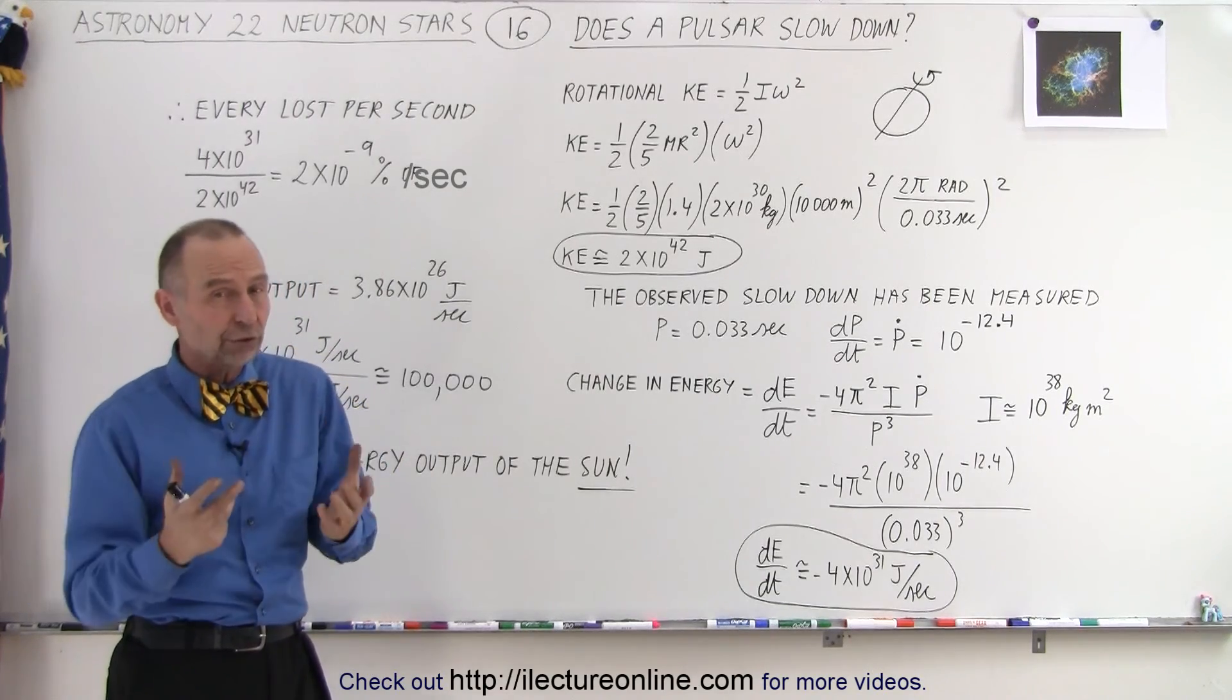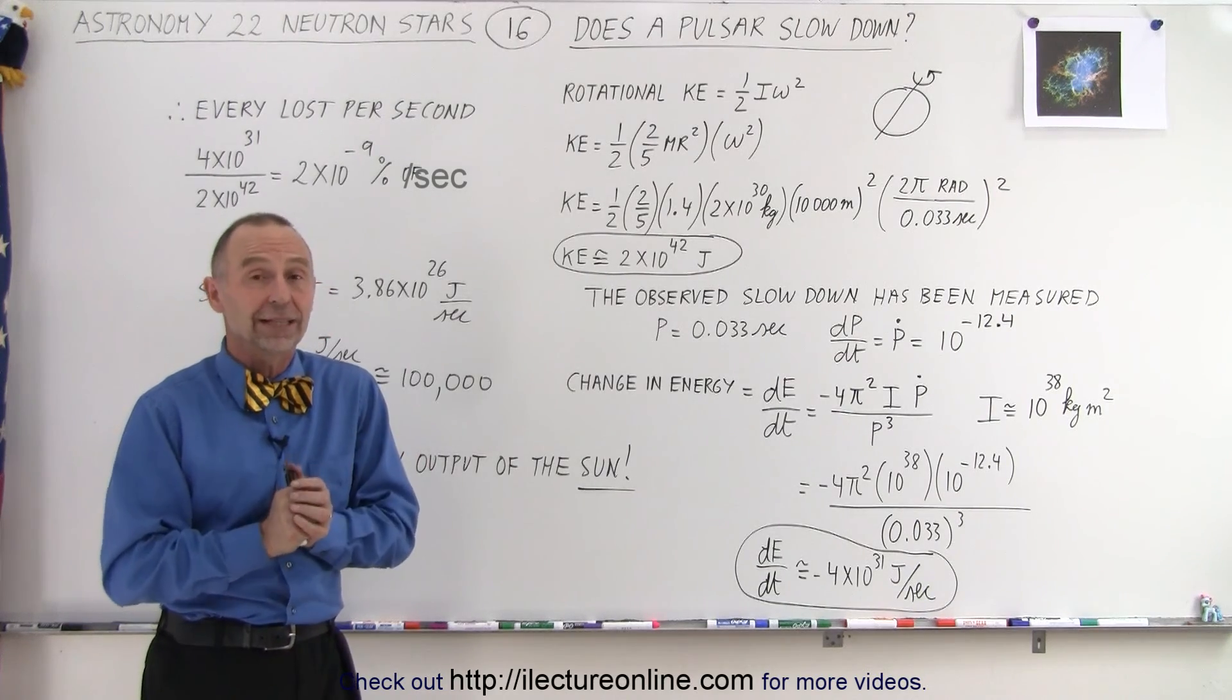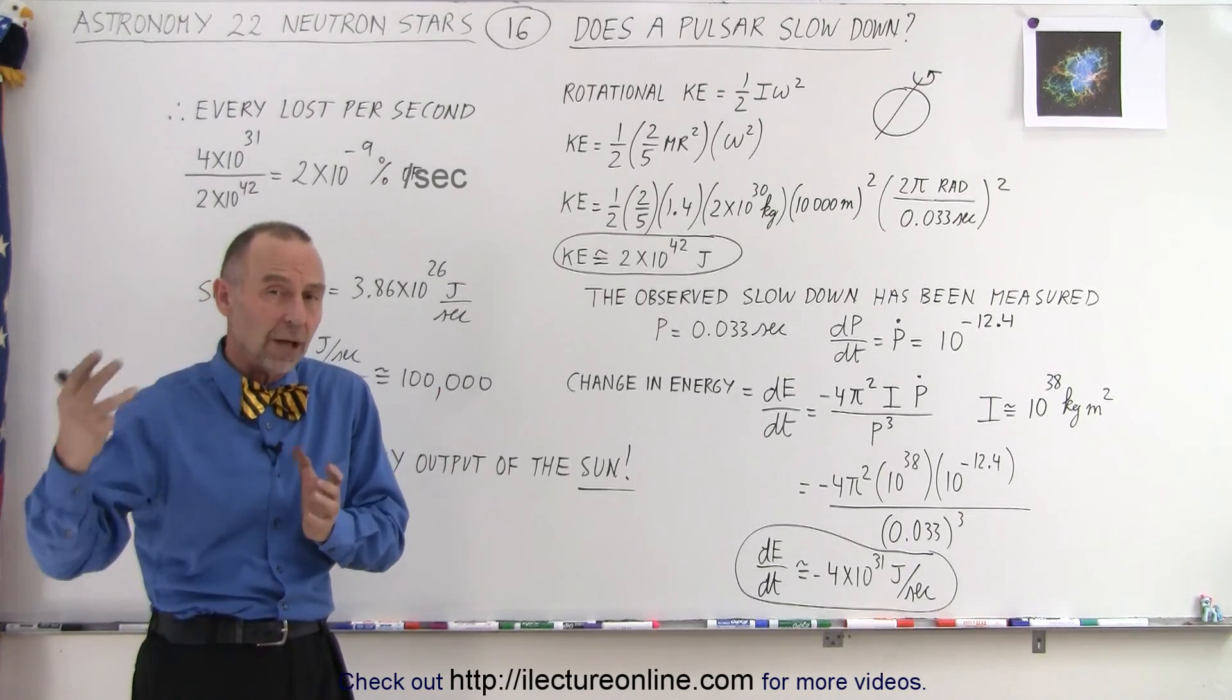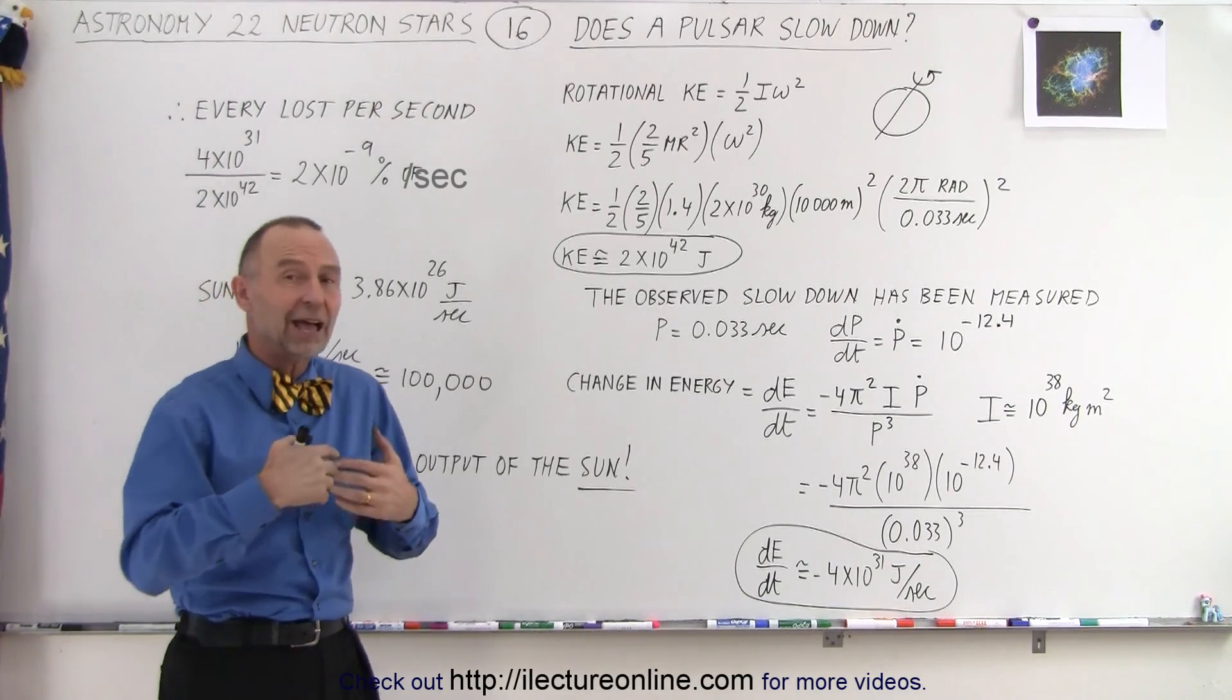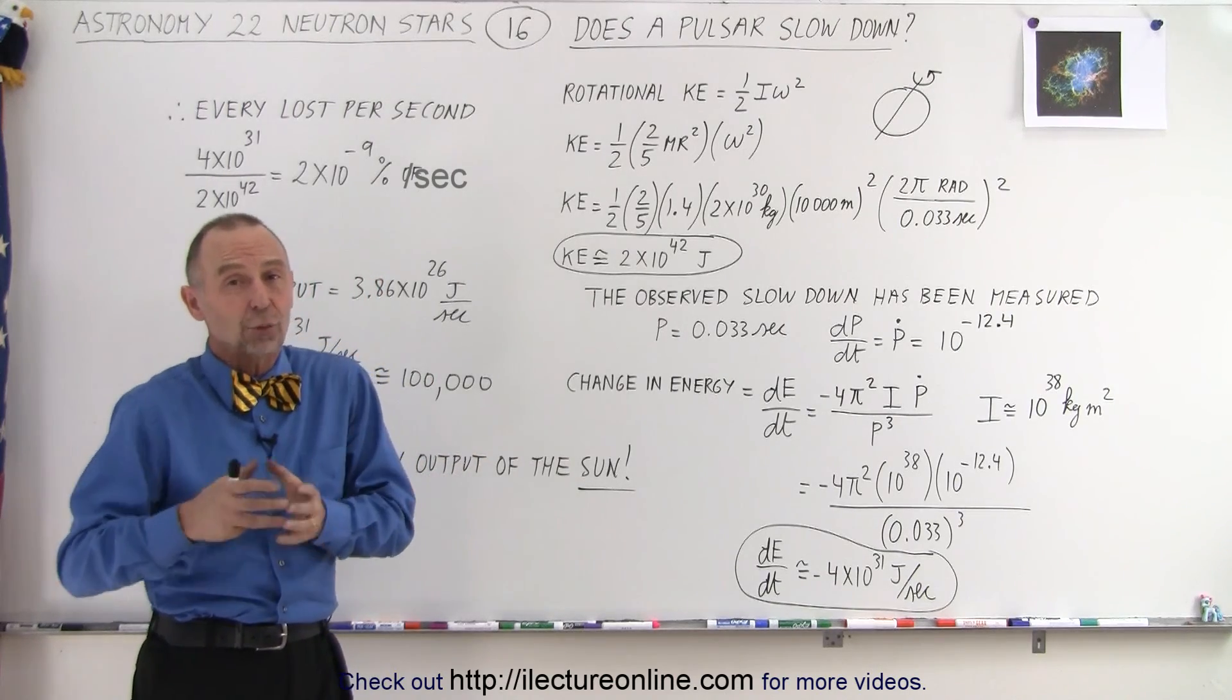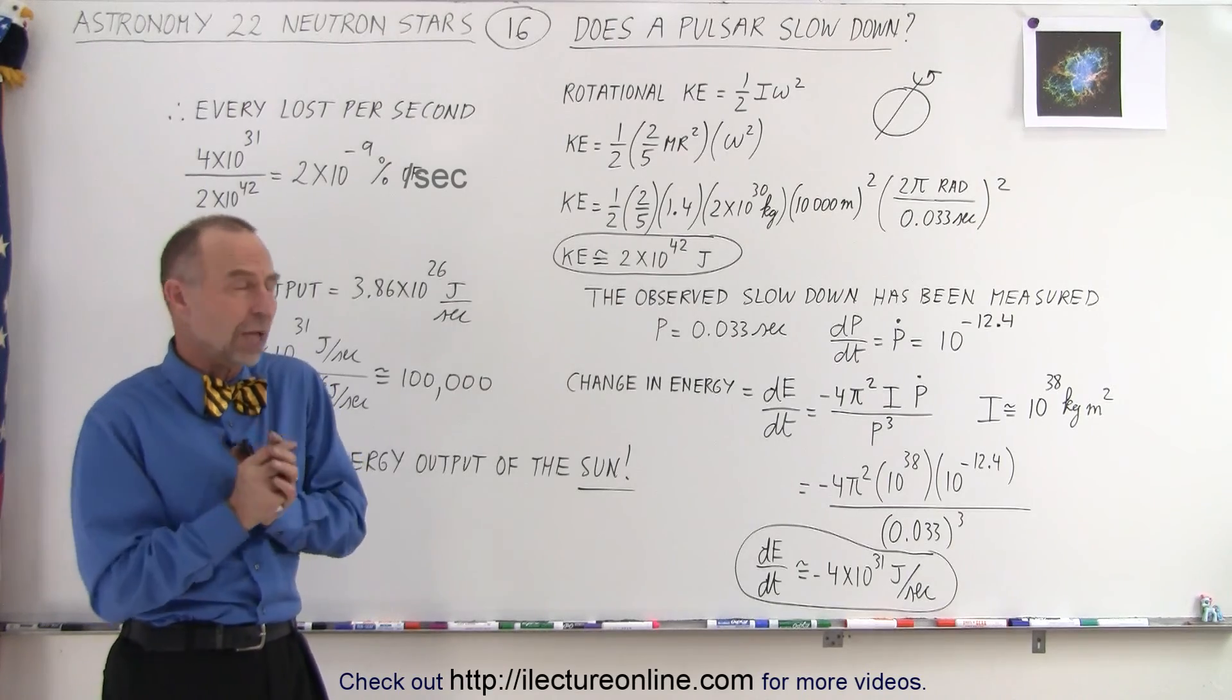The Earth, before the Moon was formed, rotated on its axis about every six hours. Since the Moon has come about, because of a huge collision between some object and the Earth, the Moon has caused the Earth to slow down to about 24 hours per day. Given another half a billion years, a day will even last 26 hours instead of 24, so the Earth is continuing to slow down.